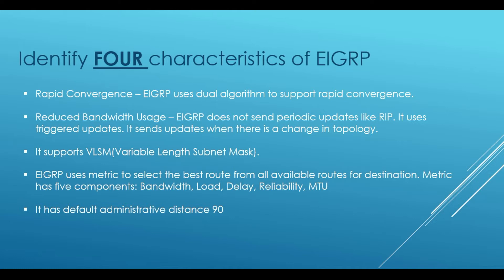So if the administrative distance is 90, you will see 90 where the route has been learned by EIGRP. This is the default value — we can change it, and I'm going to show you how to change it today.